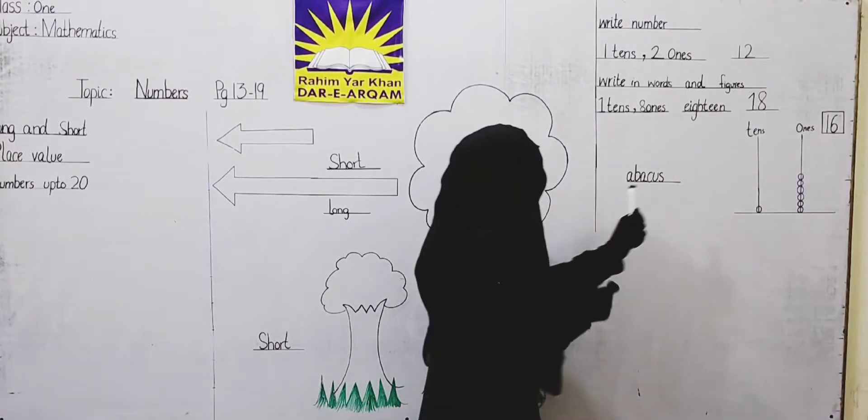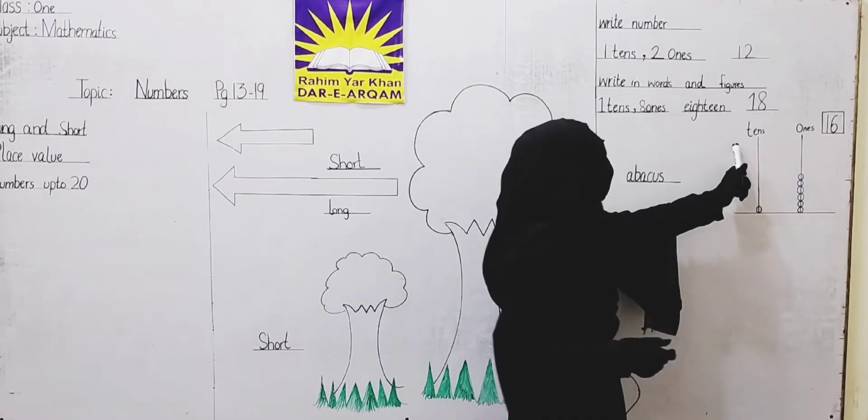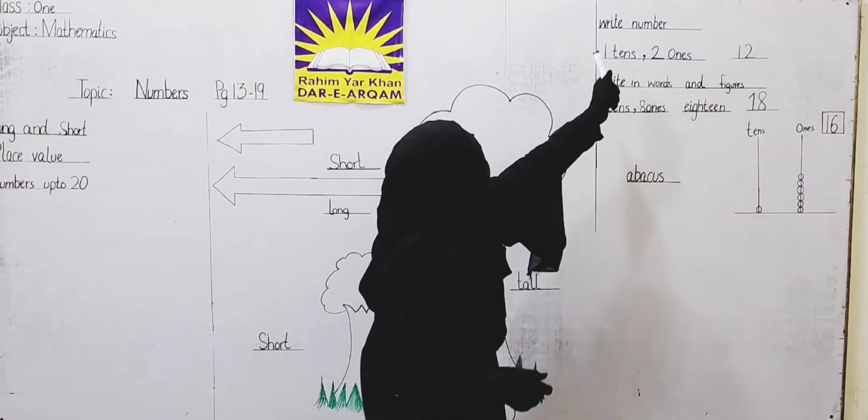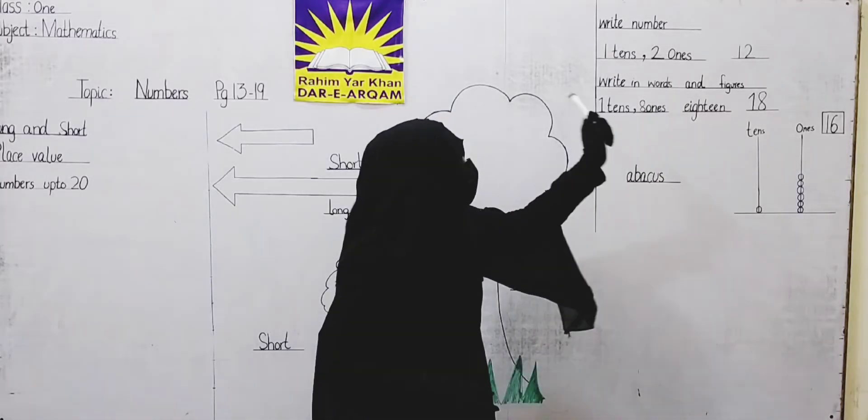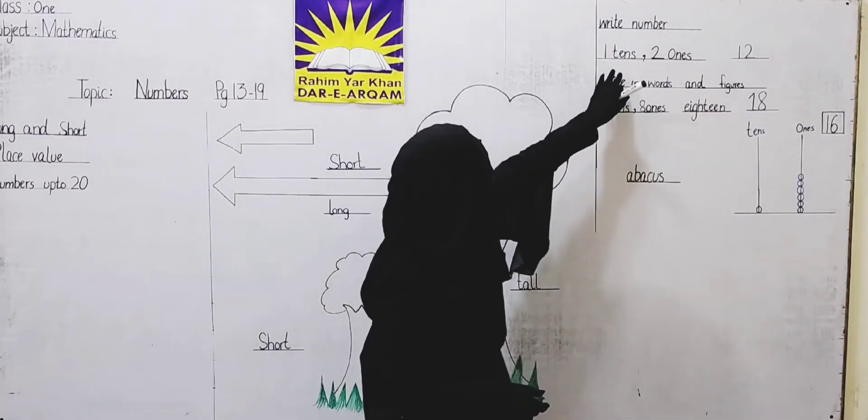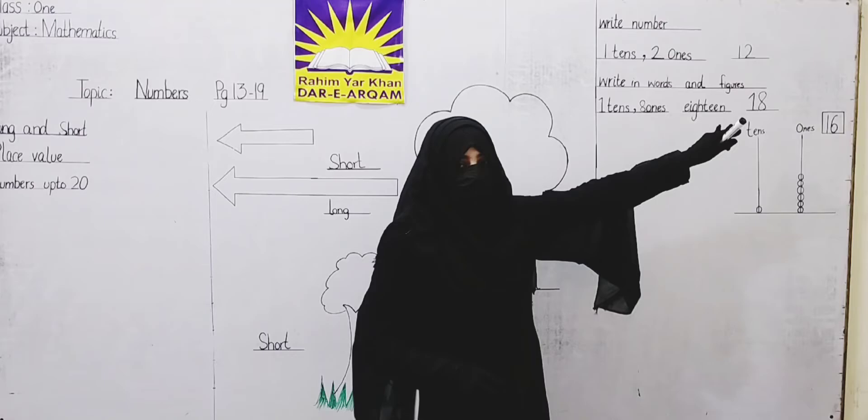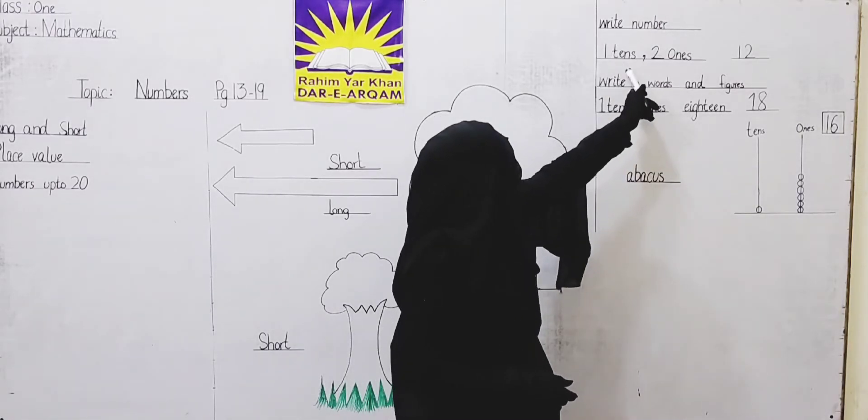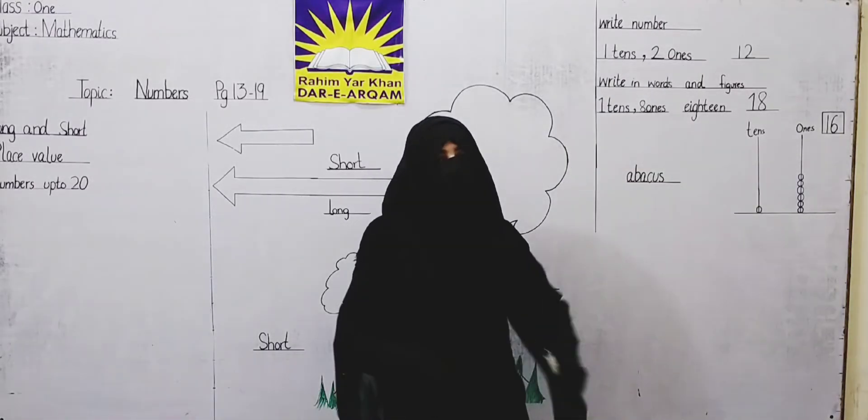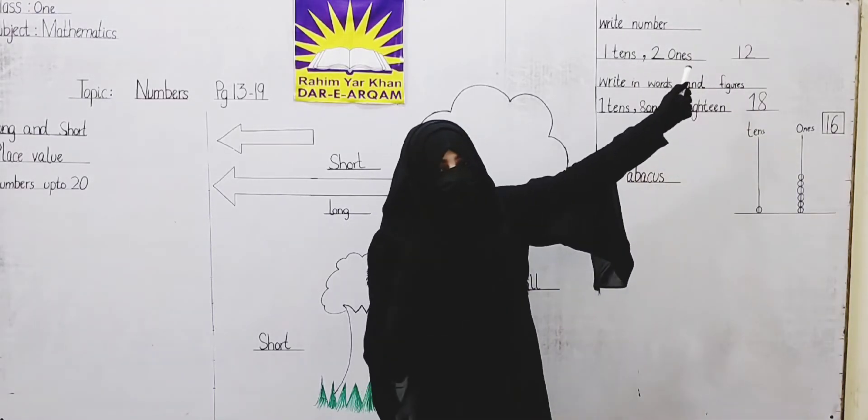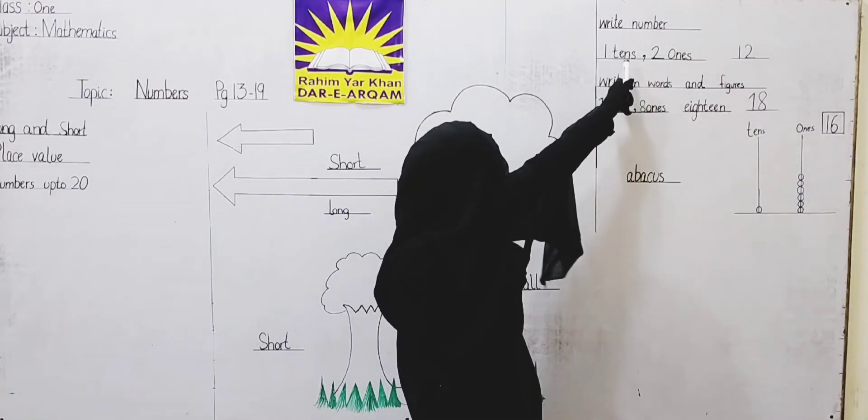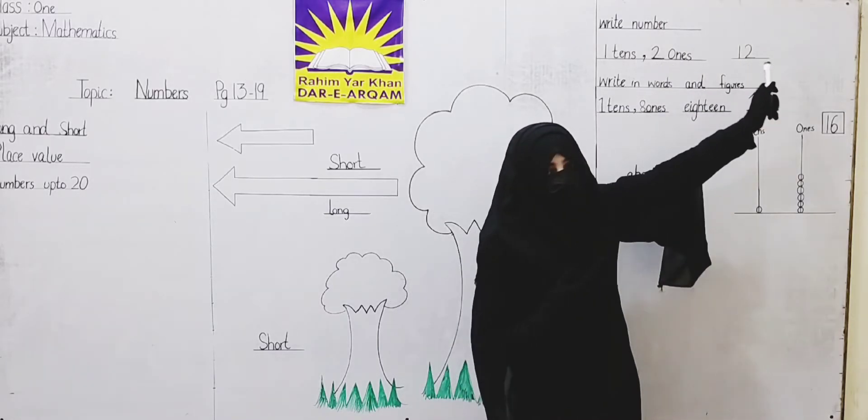Now, left hand side, we start with ones, then tens. Now, the number is one tens and two ones. We can write this number. One tens and two ones. Two ones means two. Two are in ones place.